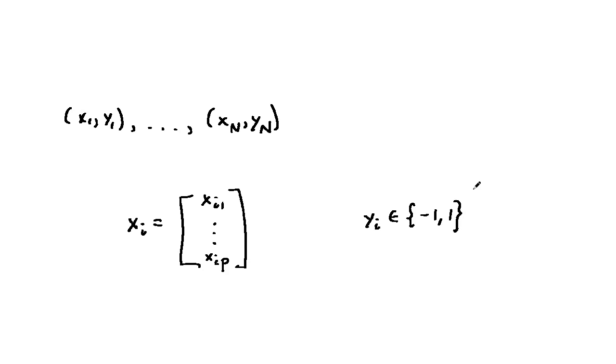For instance, if p equals 2, the xi are points in the two-dimensional plane. If we plot the points xi, we might have something like this.